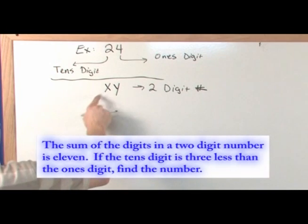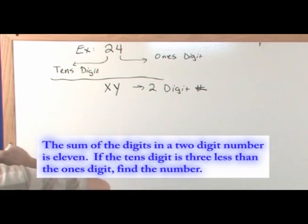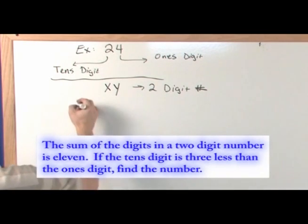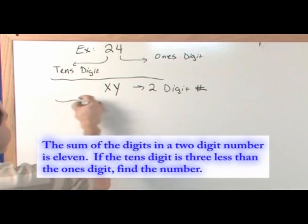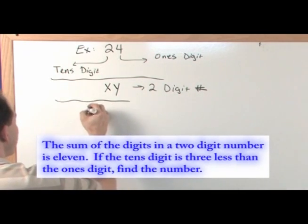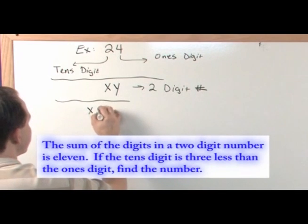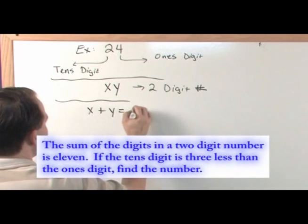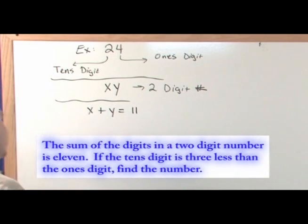Given that our number has a tens digit and a ones digit, let's go back to the problem. The sum of the two digits must equal 11, so that means x plus y is equal to 11. That's one part of the problem.